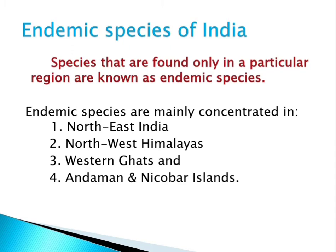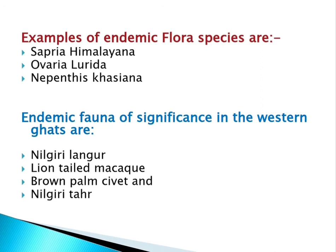Now we focus on endemic species of India. Endemic species are those found only in a particular region and are restricted to it. India's endemic species are mainly concentrated in four zones: northeast India, northwest Himalayas, the Western Ghats, and the Andaman and Nicobar Islands. Examples of endemic flora include Sapria himalayana, Ovaria, Lorida, Nepenthes, and Cassine — these plants are endemic to India.